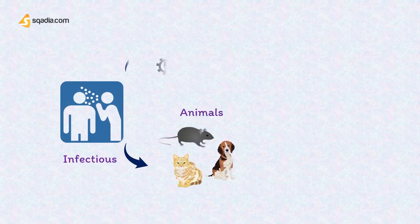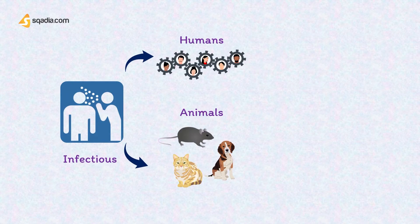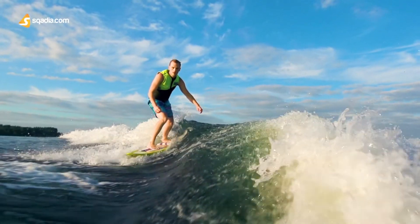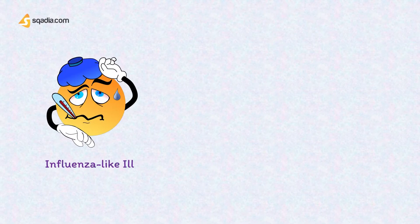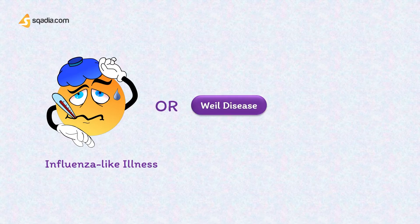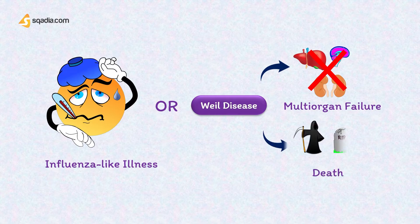Leptospirosis is an infection of animals and humans. It is the most common zoonotic infection in the world and it is easily transmitted from infected animals through their urine, either directly or through infected soil or water. A helpful mnemonic is the image of a surfer, as surfers are constantly exposed to water which can be soiled with animal urine. It can cause a self-limiting influenza-like illness or a much more serious disease known as Weil's disease, which can progress to multi-organ failure with the potential for death.